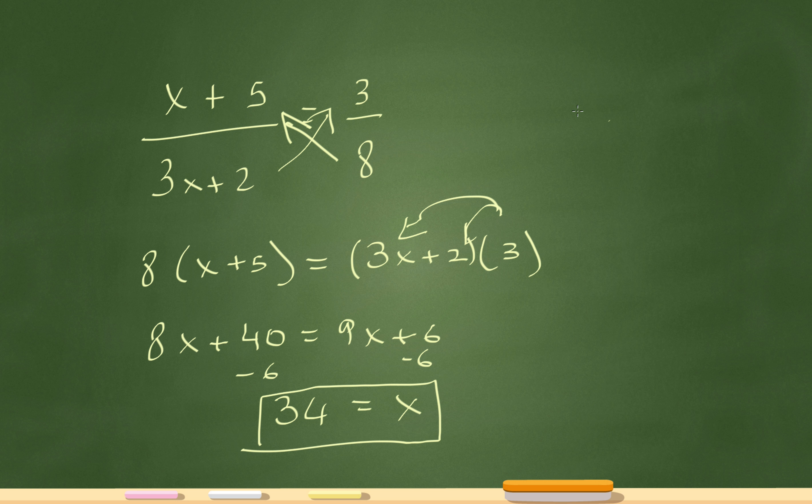I kind of went through this part a little too fast so let me just expand it out. 8x plus 40 equals 9x plus 6. All I'm doing is I'm subtracting 6 from here. So I'll have 8x plus 34 equals 9x and then subtract 8x from here, subtract 8x from here. I'm left with 34 equals just x because 9x minus 8x is just x. X equals 34.